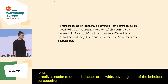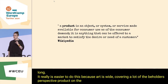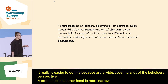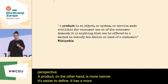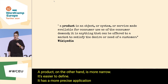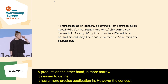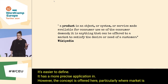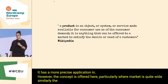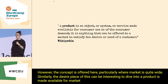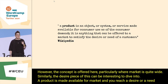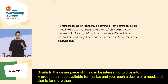Product, on the other hand, is more narrow and easier to define. It has a more precise application. However, the concept is wide, particularly where market is quite wide. The desire piece can be interesting to dive into. A product is made available for market, and reaches a desire or a need, and that is far more than the exact creation aspect of art.